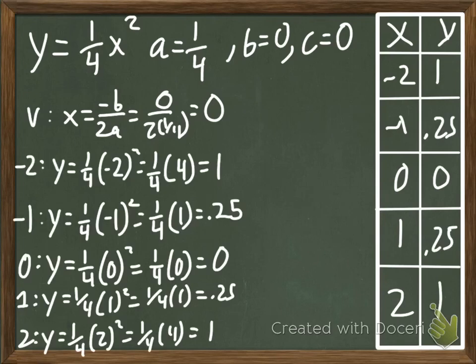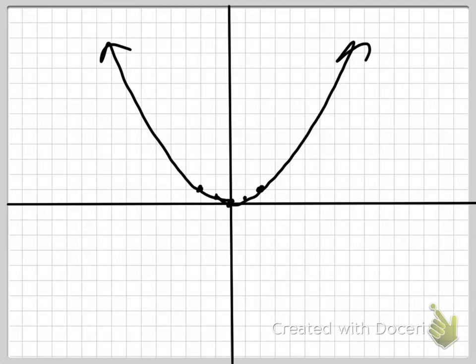Go ahead and check your work with mine on the math. If you notice, this graph is a lot fatter, bigger, wider. Fractions - anything between 0 and 1, or 0 and negative 1 - are going to make your parabola, your curve, look a lot wider. If it's bigger than 1 or smaller than negative 1, it's going to make it skinnier. And if it's between 0 and 1, or 0 and negative 1, it's going to be wider. That's it for this video.